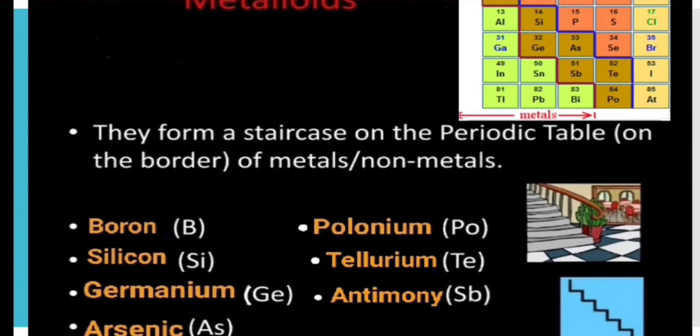metalloids are present. The name of the elements, those are boron, silicon, germanium, arsenic, polonium, tellurium and antimony.